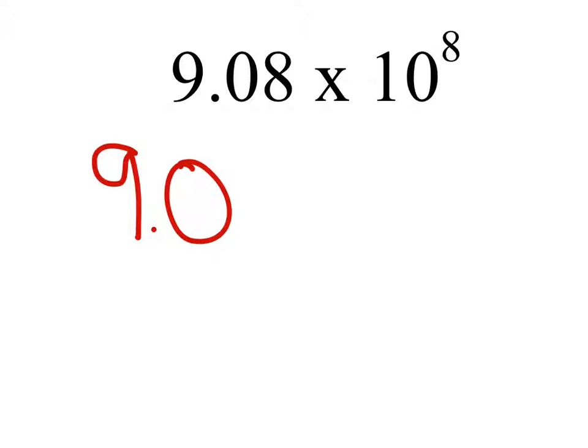Oh, you've got to explain what you're doing. So, you just write the number, and then since it's times 10 to the 8, you move the decimal over eight times.